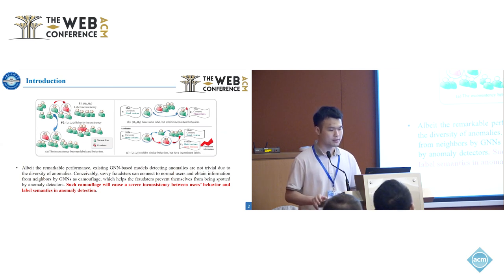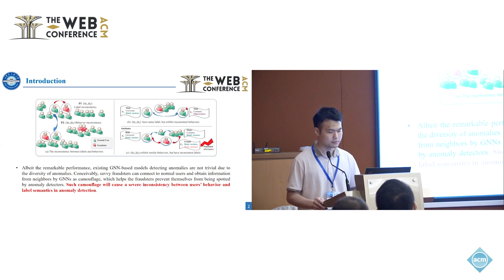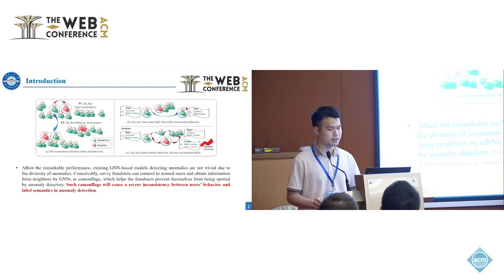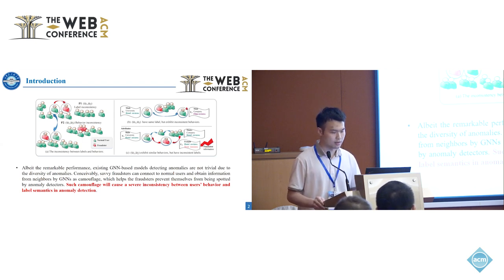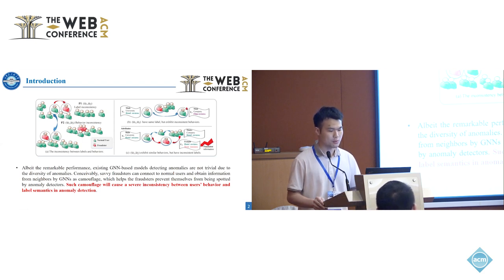Figure 1b shows that user 1 focuses on hotel reviews while user 3 is observed in film reviews. Their review content features are far from each other as they are associated with different themes. Nevertheless, they are both normal users with normal conduct from a global perspective. Thus, user 1 and user 3 behave differently from each other, even if they share the same label.